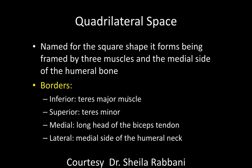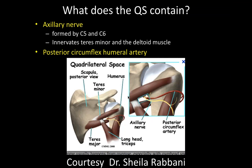Regarding the quadrilateral space — it gets its name because it's a four-sided space. The boundaries are the long head of the triceps, the teres minor and teres major muscles, and the humerus. The axillary nerve courses through this space and innervates the deltoid muscle.